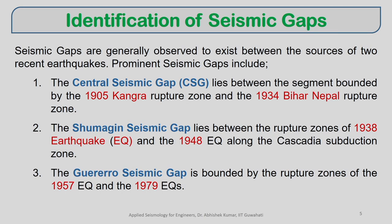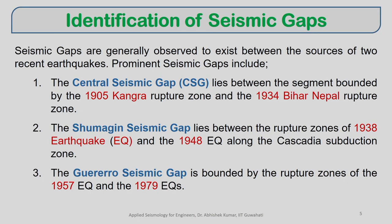Identification of seismic gaps: seismic gaps are generally identified to exist between the sources of two recent earthquakes. Prominent seismic gaps include the Central Seismic Gap (CSG) in the Himalayas, located between the ruptured area of the 1934 Bihar-Nepal earthquake and the ruptured area of the 1905 Kangra earthquake in Himachal Pradesh.